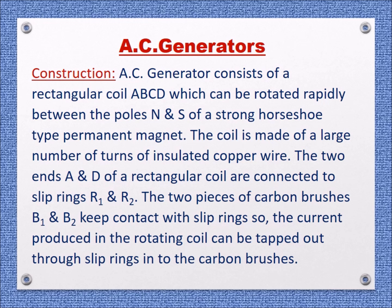The two ends A and D of the rectangular coil are connected to slip rings R1 and R2. The two pieces of carbon brushes B1 and B2 keep contact with the slip rings, so the current produced in the rotating coil can be tapped out through the slip rings into the carbon brushes.